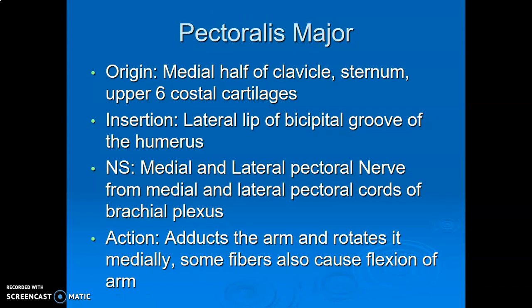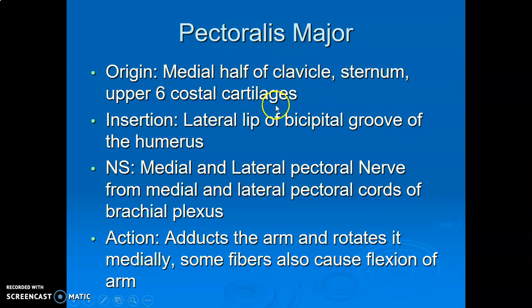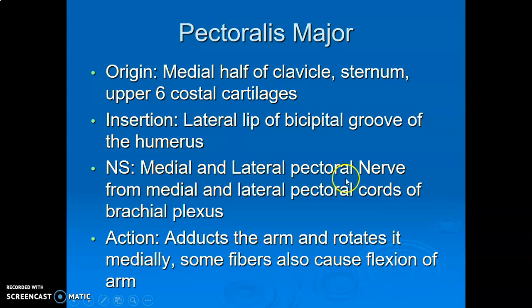Pectoralis major comes from the medial half of the clavicle, the sternum, and the upper six costal cartilages — three origins. It inserts on the lateral lip of the bicipital groove. Teres major is on the medial lip; pec major is on the lateral. It is innervated by both medial and lateral pectoral nerves — medial from the medial cord and lateral from the lateral cord of the brachial plexus.